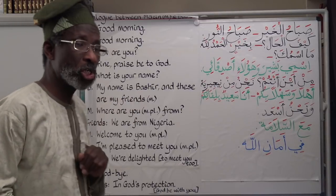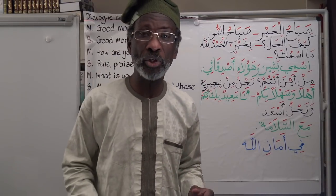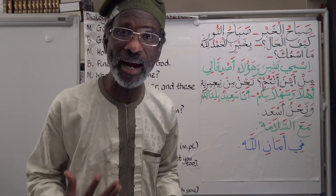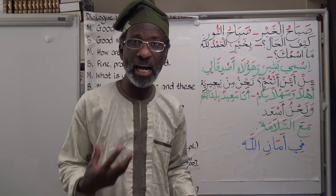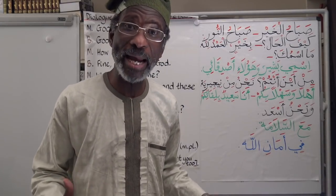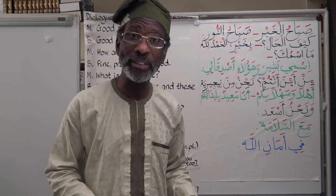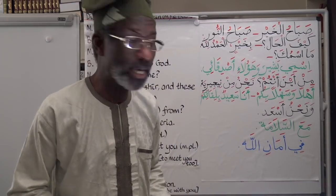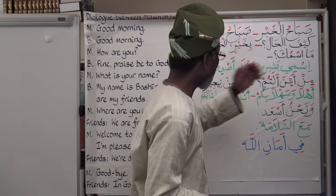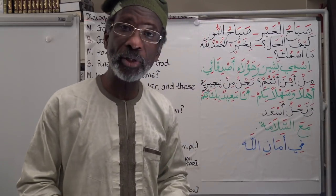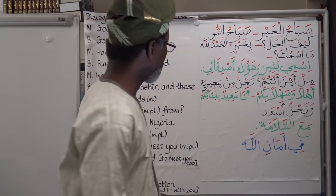My name is Bashir — 'ismi Bashir.' In Arabic, the speaker form 'ismi' is gender neutral — a boy and a girl both say 'ismi' for 'my name is.' In this case the boy is speaking, and he says 'ismi Bashir.'